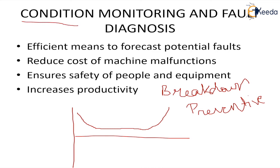Breakdown maintenance, as the name suggests, means if there is any fault the machine breaks down, and we simply replace that particular component with a new one. This is affordable when the breakdown does not cause much damage and the part is inexpensive. We do not investigate why the system is failing — we just replace the damaged part.